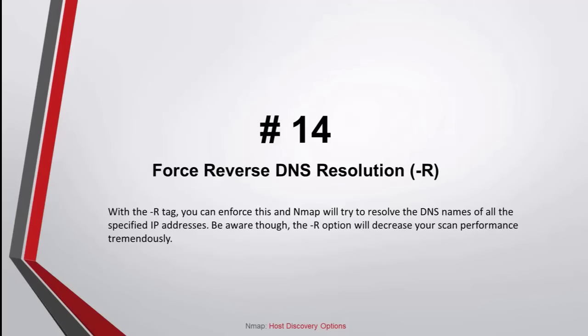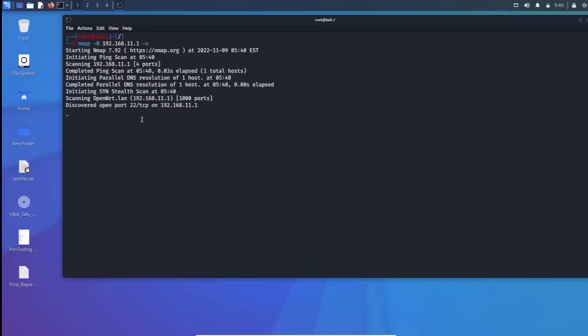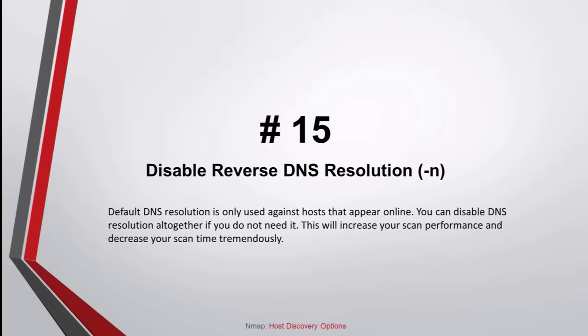Command number 14: Force reverse DNS resolution with the -R flag. You can enforce this and NMAP will try to resolve the DNS names of all the specified IP addresses. Be aware though, the -R option will decrease your scan performance tremendously. Command number 15: Default DNS resolution is only used against hosts that appear online. You can disable DNS resolution altogether if you do not need it, which will increase your scan performance and decrease your scan time tremendously.